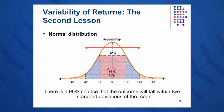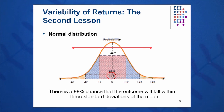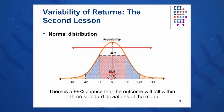We also know from statistics that there's a 95% chance that any future outcome will fall within two standard deviations of the mean, and a 99% chance it will fall within three standard deviations of the mean. These are common statistics from your stat class, econ class, or even psych class — and they also pertain in finance. If I have an average and a standard deviation, I can calculate potential outcomes.